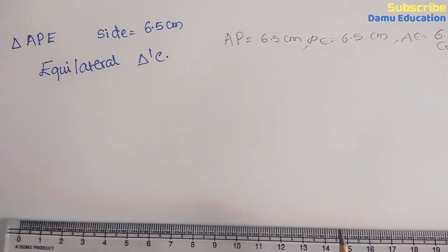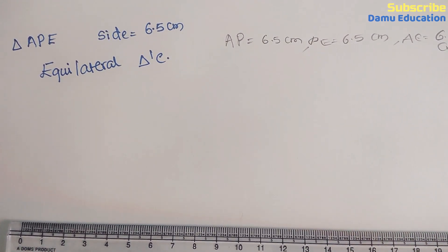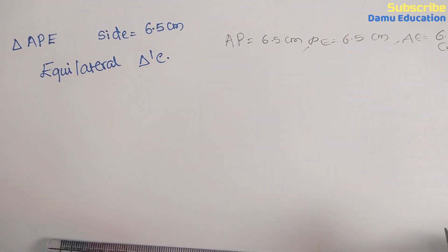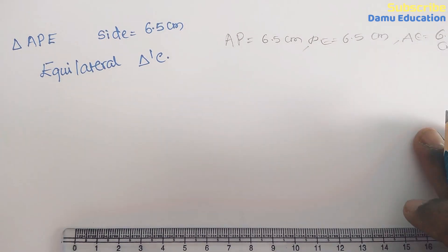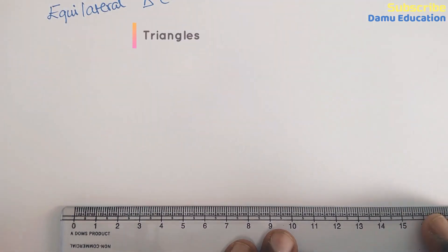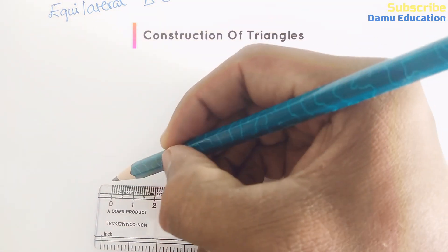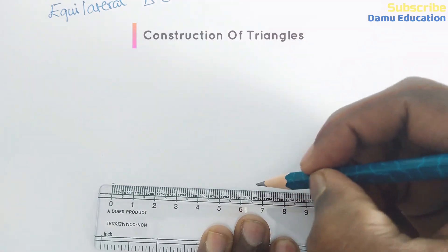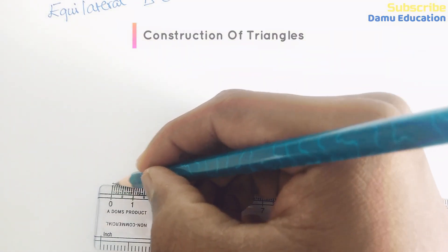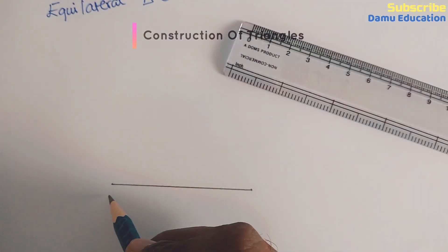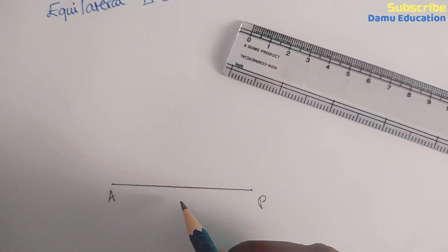Equilateral triangle means all the sides will be equal to each other. First, draw AP line segment with 6.5 centimeter. Please make sure that you keep your scale horizontally. So this is AP, 6.5 centimeter.